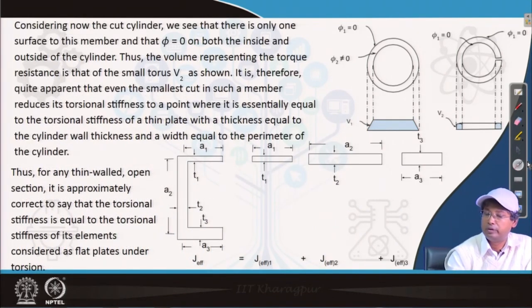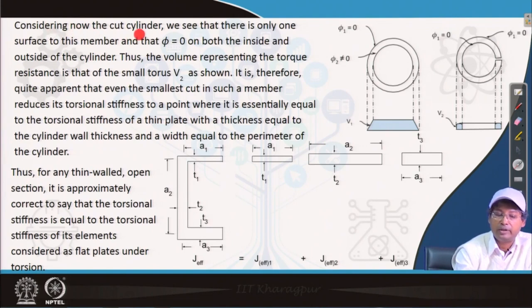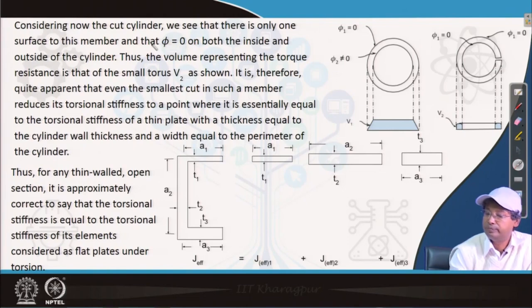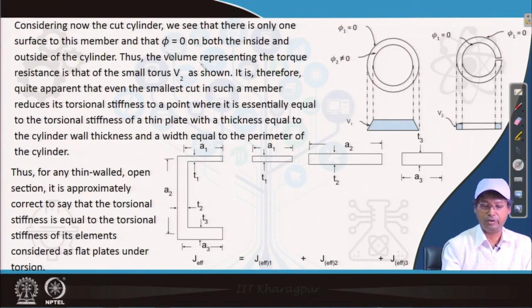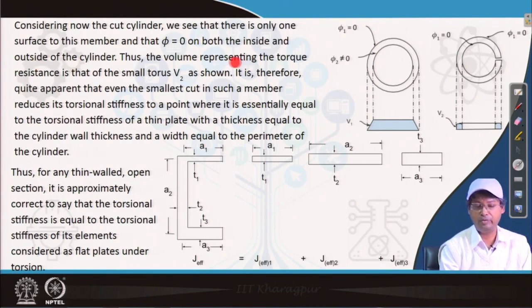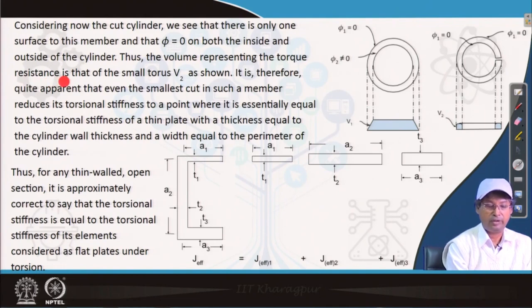Since the resistance to a torsional moment is proportional to the volume V under the membrane, here this resistance is indicated by the shaded area shown as V₁. We are supposed to find out this volume for this closed ring. What happens if it is not a closed ring? In case of cut ring, considering now the cut cylinder, we see that there is only one surface to this member and that φ equals 0. This total edge if we look at, starting from here to here, it is a complete single edge and there φ equals 0 on both the inside and outside of the cylinder.